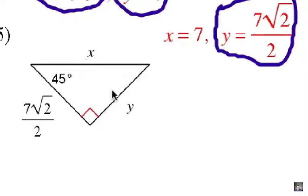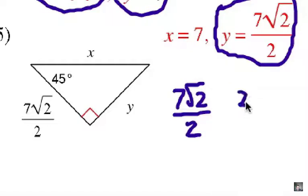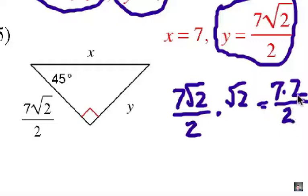Now, the hypotenuse is radical 2 times longer, so we have the leg, 7 radical 2 over 2, times radical 2. Which is 7 times 2, because radical 2 times radical 2 is radical 4, which simplifies to 2. And we have a 2 on the bottom, which cancels out, so that's why our hypotenuse is just simply 7. It looks a little more complicated than it is.